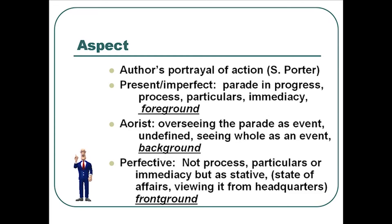This aspect way of looking at things holds some potential for us because it breaks the connection between time and tense and puts it into the realm of the author's portrayal of an action. In the present and imperfect tense form, it's used to foreground material. The aorist is kind of a background, seeing the whole. And the perfective is front-grounding material in more of a stative kind of manner. So this will be another way, besides tense equals time, of looking at things — giving us the writer's perspective on how the author desires to portray an action.